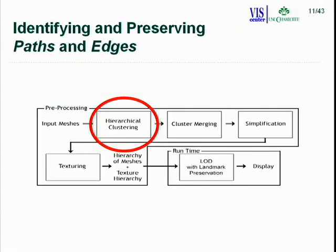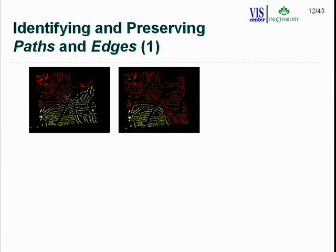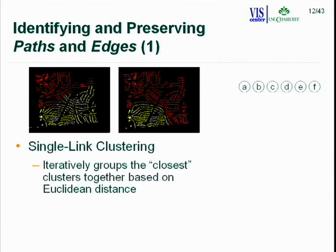For preserving paths and edges, we use hierarchical clustering. Compared to traditional methods like k-means, our method ensures cluster boundaries follow logical roads rather than arbitrary cuts. We use single-link clustering, which iteratively groups the two closest clusters based on Euclidean distance, ultimately producing a binary tree called a dendrogram.